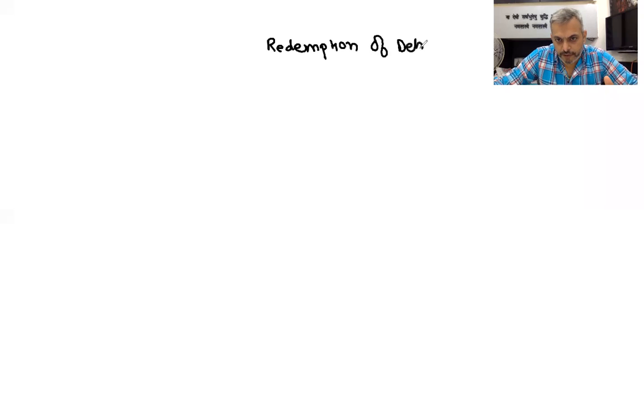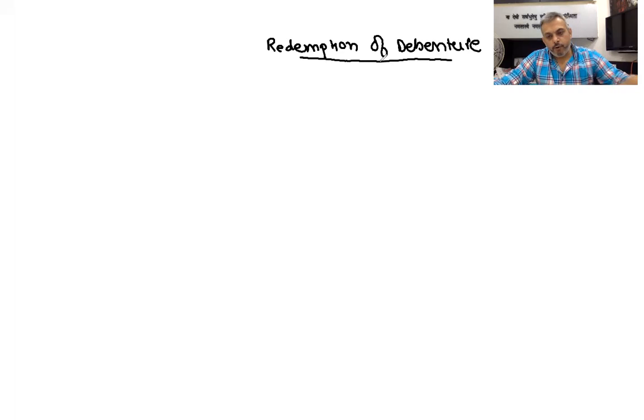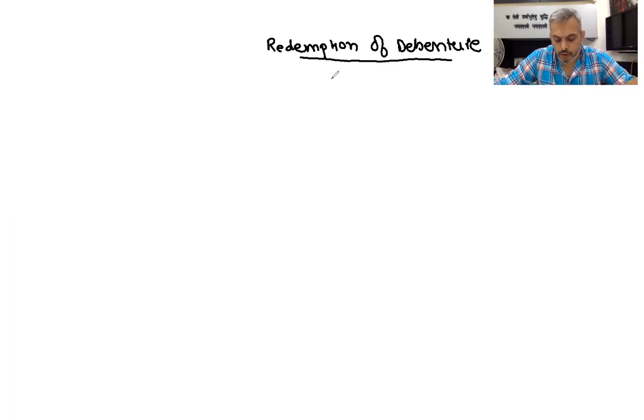Today we will be starting with the redemption of debentures and various permutations and combinations regarding various types of debentures issued either at a premium, at a discount, or at par, and how they are redeemed and what are the journal entries for it. Write the heading 'Redemption of Debentures'. This is very important from an exam point of view and very likely to come in your exam.